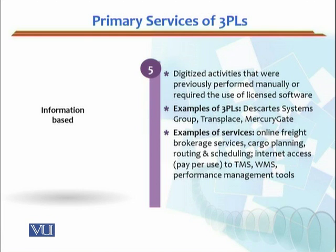The fifth and last one is information-based 3PLs. These involve digitized activities that were previously performed manually or required the use of licensed software — ya toh aap ko licensed software lena parta tha ya manually provide karte the. If you cannot afford that software, toh yeh information-based 3PLs aap ko woh services provide karte hain. Examples: Discarded Systems Group, Transplace, and MercuryGate. Services provided include online freight brokerage services, cargo planning, routing and scheduling.